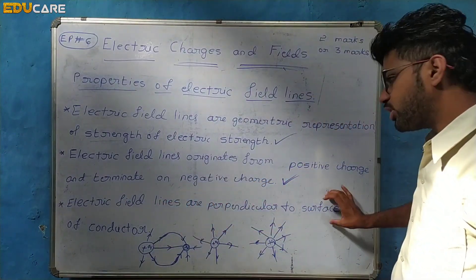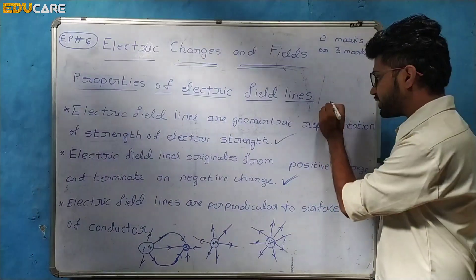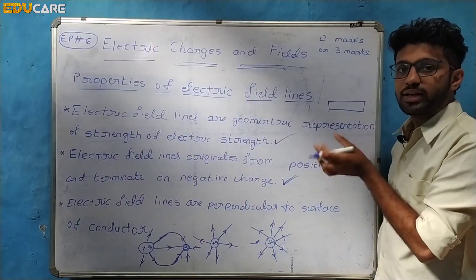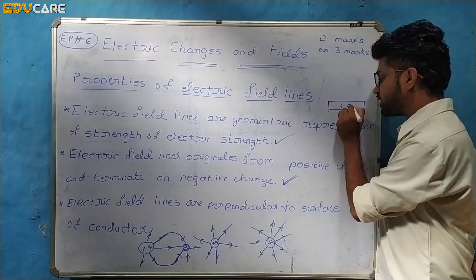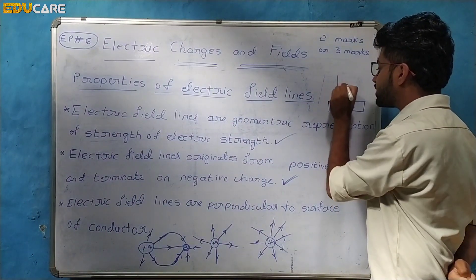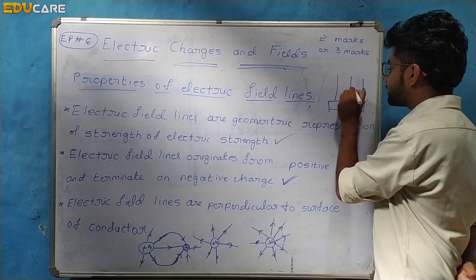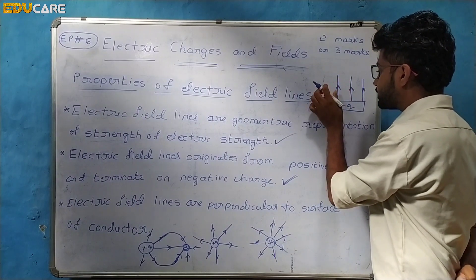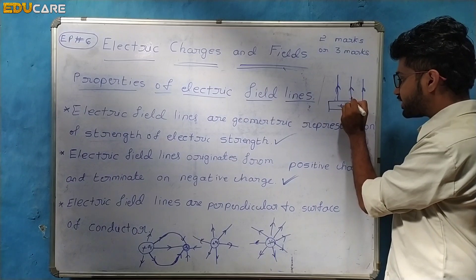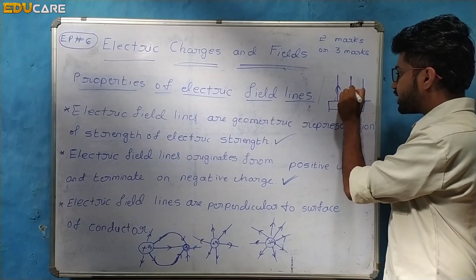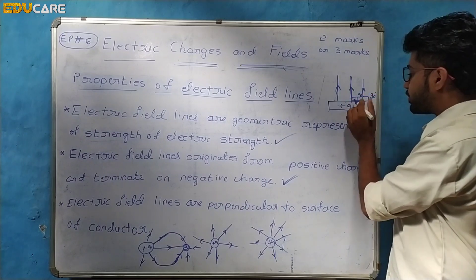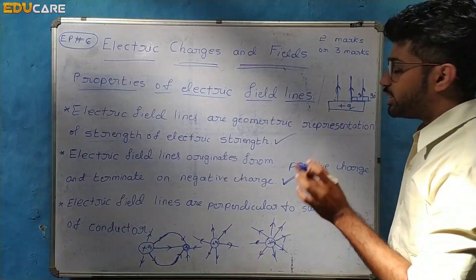The next property: electric field lines are perpendicular to the surface of the conductor. Here is the conductor, here is the electric field, and here are the positive charges. The field lines are radial and perpendicular to the conductor surface at every point.